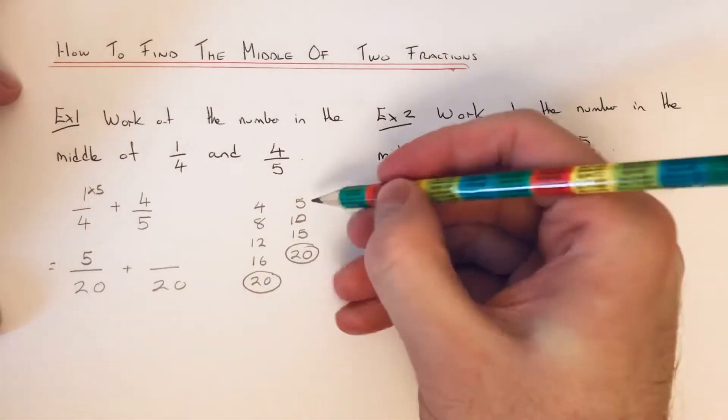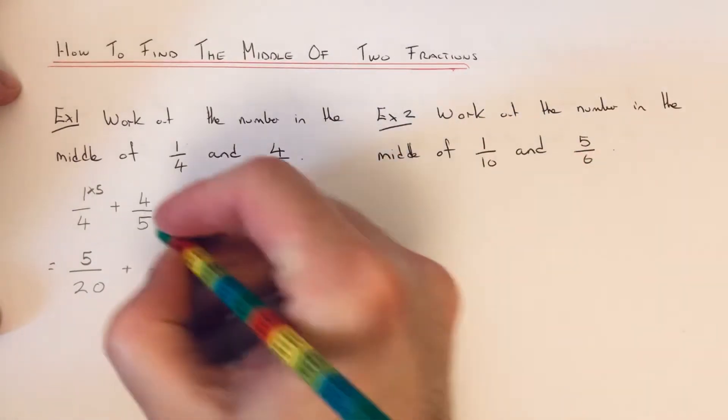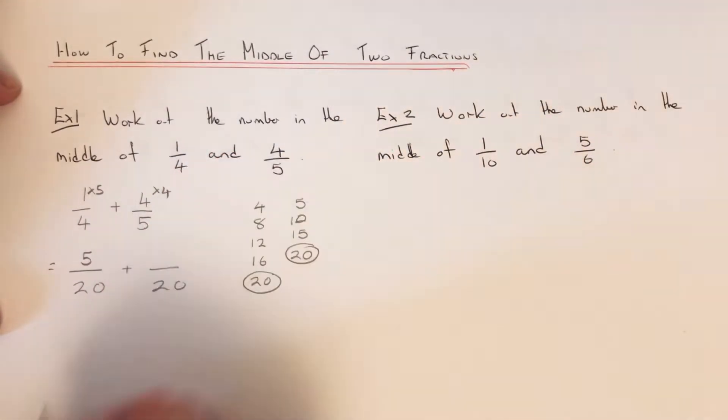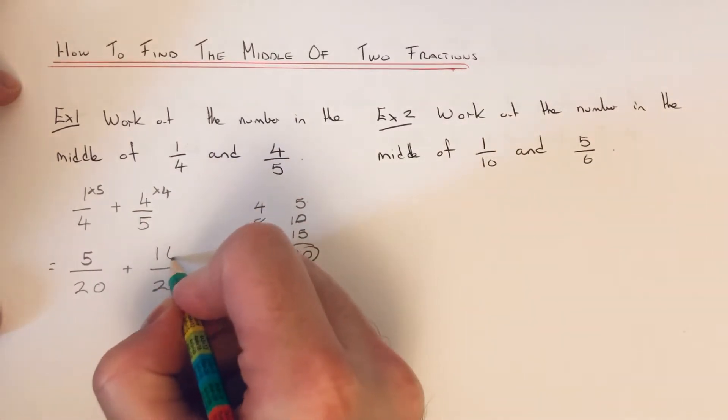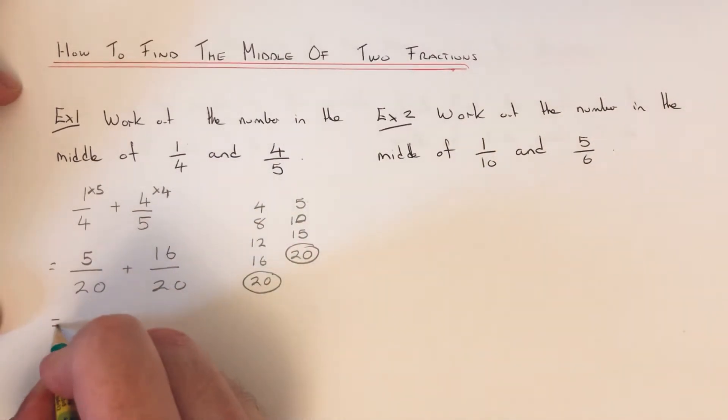Five goes into twenty one, two, three, four times. So times this by four. So four fours is sixteen. So we can now add the two fractions together because we've got a common denominator. That is twenty-one over twenty.